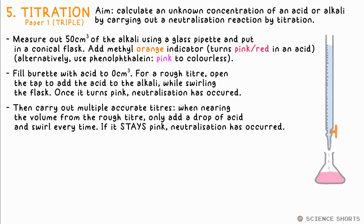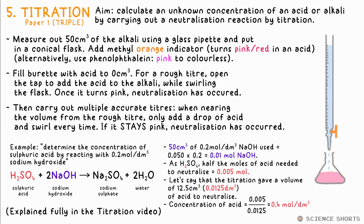After each drop, swirl the flask. If it turns pink but returns to orange after swirling, it's not done. It's only once it stays pink that gives you the volume needed to neutralise the alkali. You need to use your knowledge of moles and stoichiometry of H⁺ to OH⁻ ions in the acid and alkali respectively to calculate the unknown concentration in moles per decimetre cubed — that's the moles of the acid or alkali used divided by the volume of solution in dm³. Here's a sample calculation for sodium hydroxide and sulfuric acid. To see this explained, check out my separate titration video.